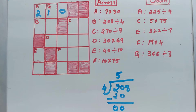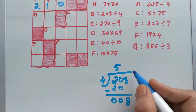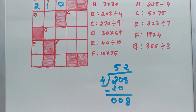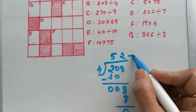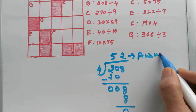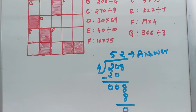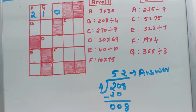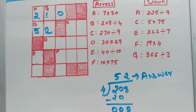Now bring down the next number. There's nothing from the zero, so bring down the next number: 8. 4 times 2 is 8, so the remainder is 0 and our quotient — our answer — is 52. So for B, the answer is 52.